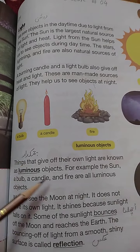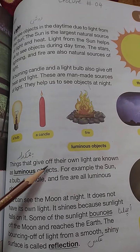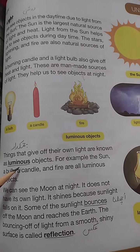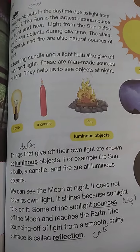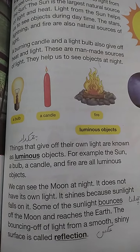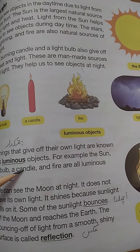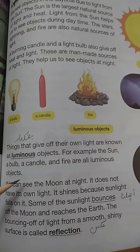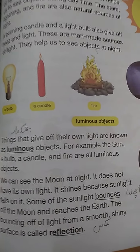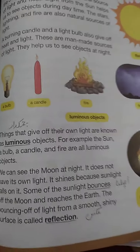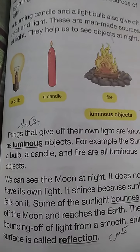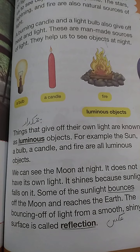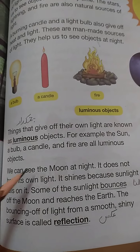Things that give out or give off their own light are known as luminous objects. ऐसी चीजें जो light देती हैं, रोशनी देती हैं, उनको luminous objects बोलते हैं। For example: sun, bulb, candle, fire — these are all luminous objects. वो चीजें जो रोशनी नहीं देती हैं उनको non-luminous objects बोलते हैं।